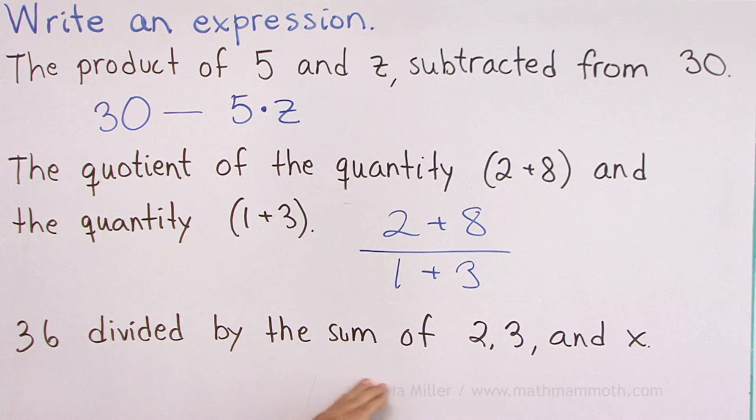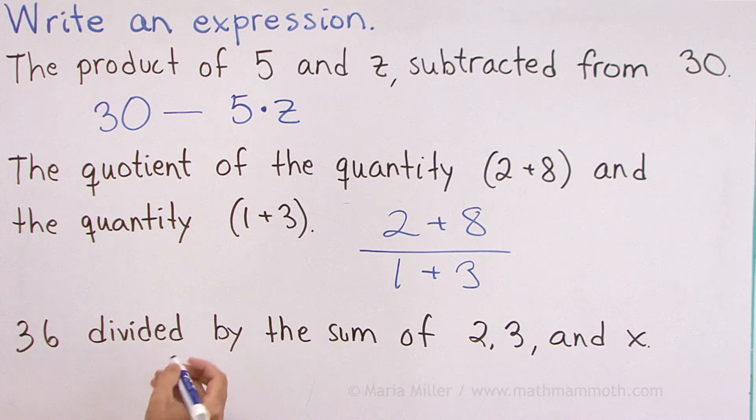36 divided by the sum of 2, 3 and x. Could you write that expression? It's not difficult. 36 divided by the sum of 2, 3 and x.